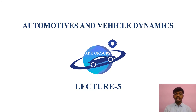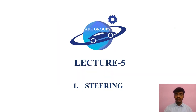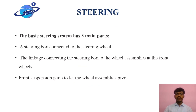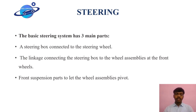Hello everyone, welcome back to lecture 5 on automotive and vehicle dynamics. In this lecture we are going to cover steering mechanism. The main function of steering is to convert the rotary motion of the steering wheel to the linear motion of the road wheels. Steering is used to turn front wheels using hand operation so that the driver can change the direction of the vehicle.